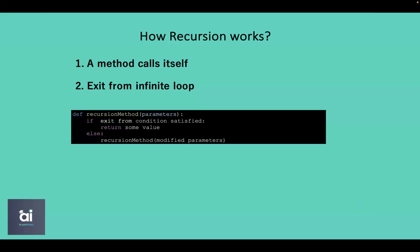From this syntax we can easily see that the two mentioned conditions are implemented. It checks a given condition — if the condition is satisfied then it returns some value, otherwise it continues to call the recursive method recursively until the condition is met.